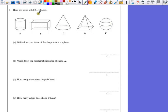Question 1. Here are some solid 3D shapes. Part A. Write down the letter of the shape that is a sphere. Sphere is the mathematical name for a ball, so the answer for that one would be E.